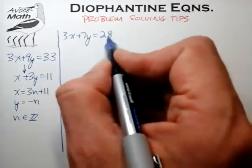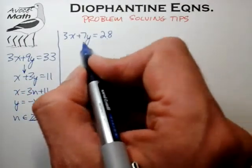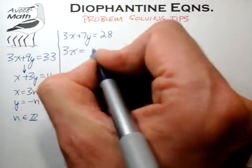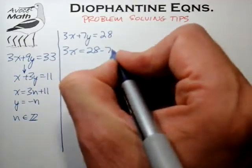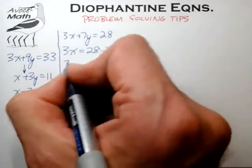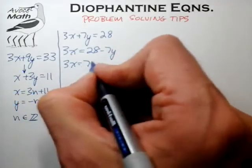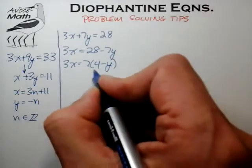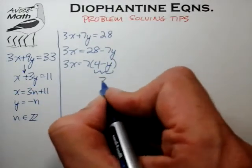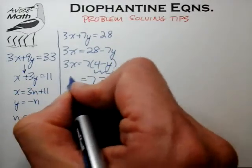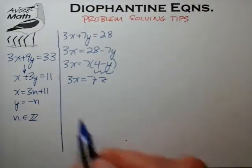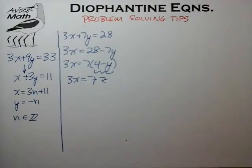In the case where one of the coefficients divides evenly into the constant term, bring that term over to the right side and factor out that common divisor — 7 in this case — and do a variable substitution where we substitute z for (4 minus y). Now we're left with a simple ratio Diophantine equation, and we've come across those before. They're quite easy to solve.